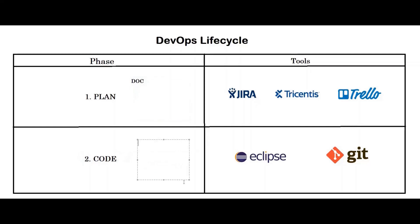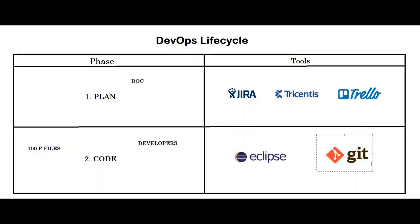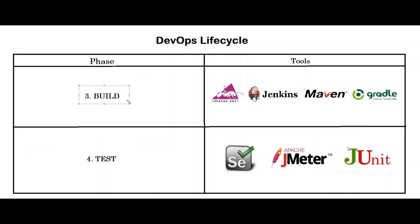In the coding phase, developers write code in languages like Java, Python, Kotlin, or Ruby. Hundreds of programming files may be created. All the files should be saved properly and version controlled — that is where a version control system tool like Git comes into the picture. Another tool used in this phase is Eclipse.